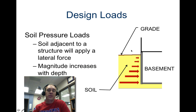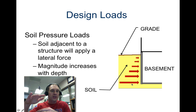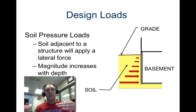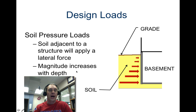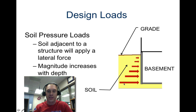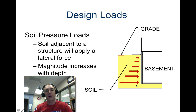Soil pressure: as you get deeper underground, there is more and more pressure from the soil above. So it pushes inward more and more. There is soil pressure on basement walls and foundation walls, which is why sometimes buttresses are built out to the side to hold the wall in. The deeper the basement walls, the more likely you'll need to buttress to keep that wall from collapsing inward.